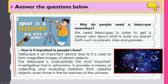Question number two: how is it important in people's lives? The telescope is an important device because it is used to form magnified images of distant objects. The telescope is undoubtedly the most important investigative tool in astronomy. It provides a means of collecting and analyzing radiation from celestial objects, even those in the far reaches of the universe.